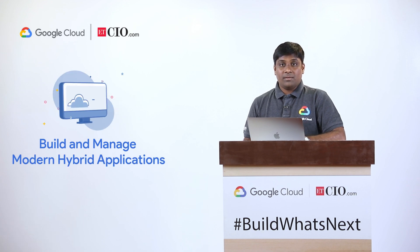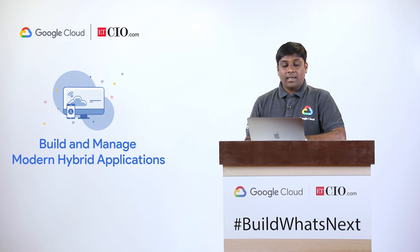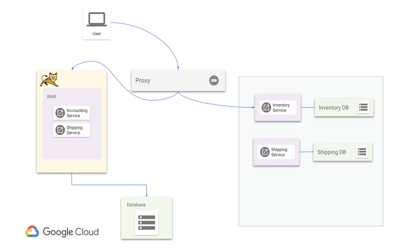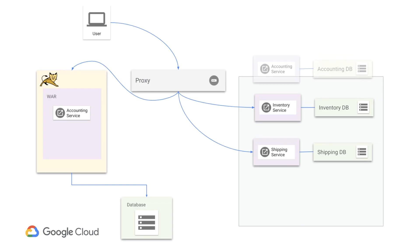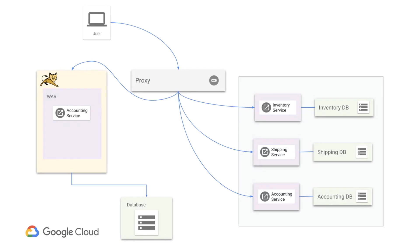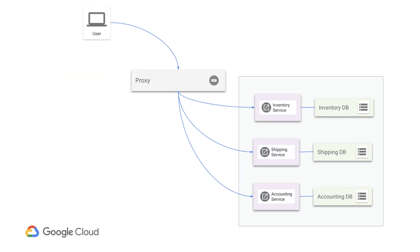From here, we start implementing some functionality of inventory service and redirect user traffic for the newly implemented APIs to the extracted microservice, while the rest goes back to the monolithic service exactly as before. Once we finish implementing the entire inventory service APIs, we simply remove inventory service from the monolithic application. The process gets repeated — let us say we want to do this for shipping service next. Again, you set up a binary and a separate data layer, start redirecting requests for the implemented functionality to the new microservice through the proxy, and once the entire functionality is implemented, you remove the shipping service from the monolith. You repeat the same for the last service — in this case, accounting service — and finally, once you have extracted all the pieces using the strangler pattern, you have converted the monolithic application into microservices.